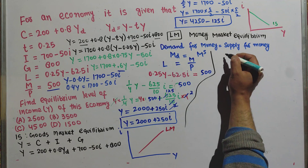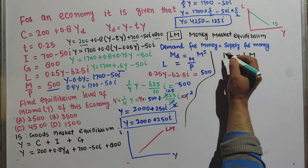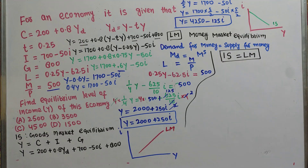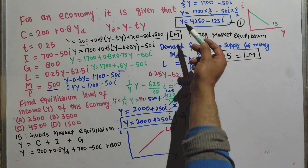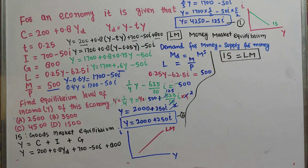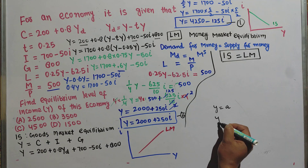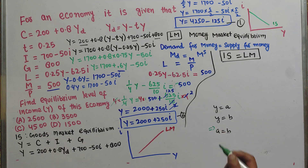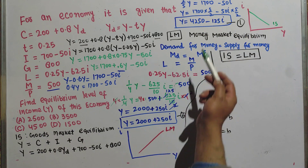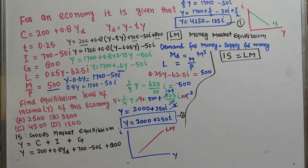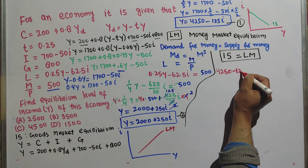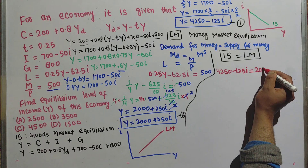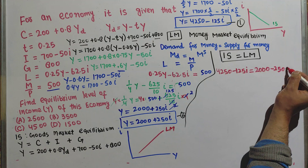Simultaneous equilibrium requires IS = LM. We have IS equation: Y = 4250 − 125i, and LM equation: Y = 2000 + 250i. Since the left-hand side is the same (Y), we can equate the right-hand sides: 4250 − 125i = 2000 + 250i.